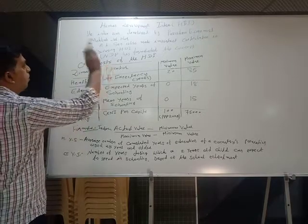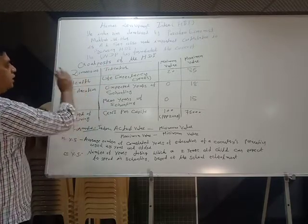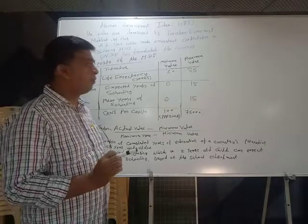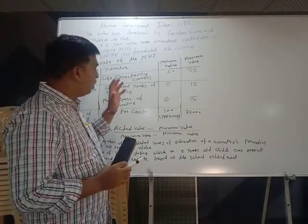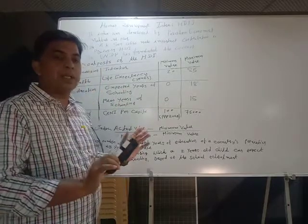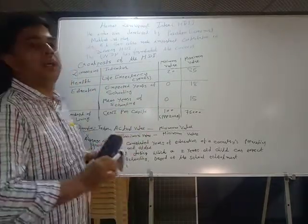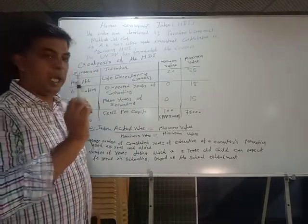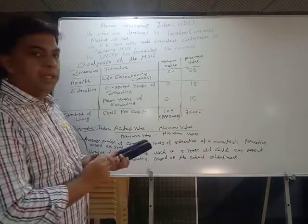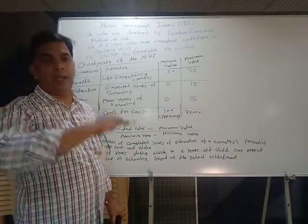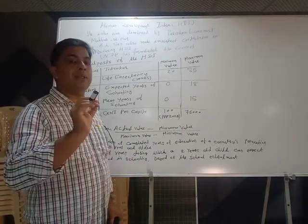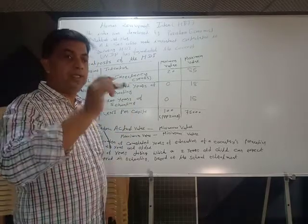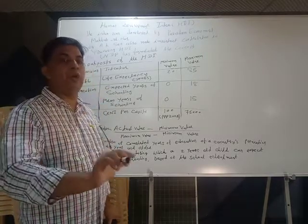Let me discuss the dimensions and goals. The first dimension of HDI is health, and the indicator is life expectancy at birth. If a country has high life expectancy, what does it mean? For example, when we started planning in India, average life expectancy was just 32 years. Nowadays, in recent years, life expectancy has increased up to 68 years. What does this indicate?